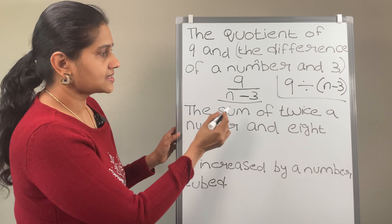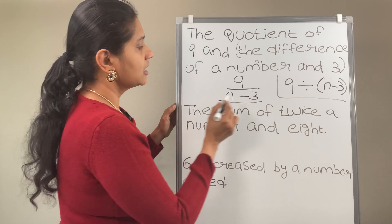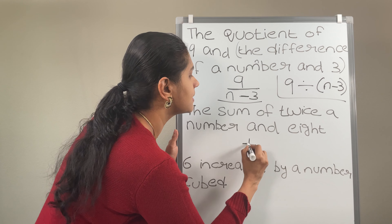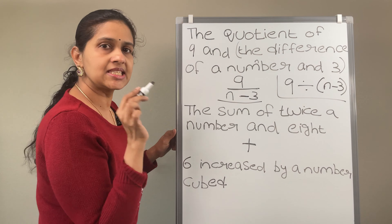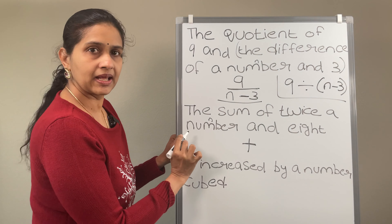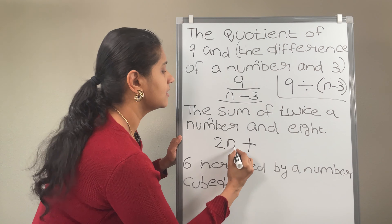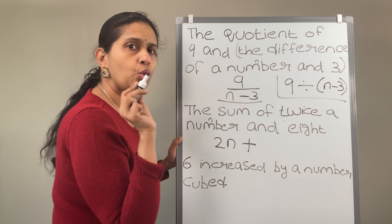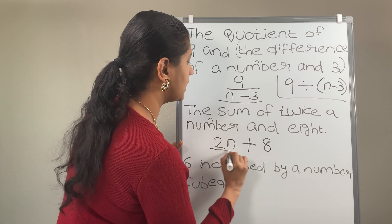Next is the sum of twice a number and 8. The sum — so what we are going to do? We are going to add something. Consider n as the number. Twice a number means 2 times n, which is 2n. And 8. So simply put 2n plus 8.